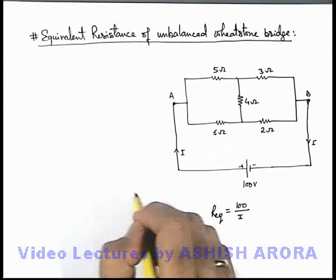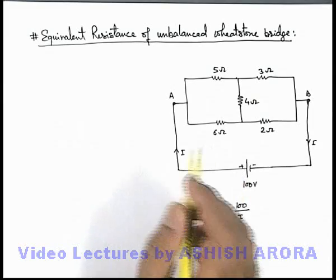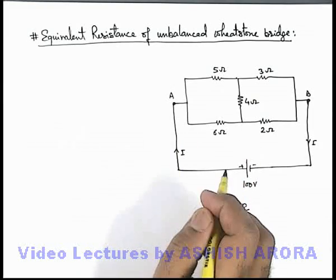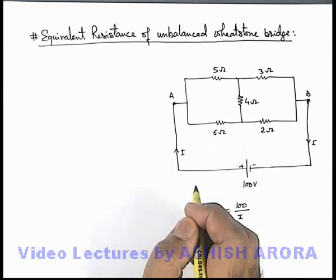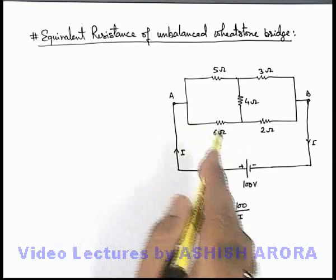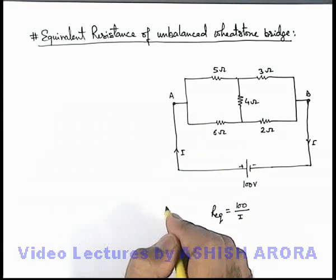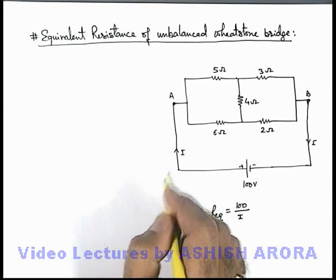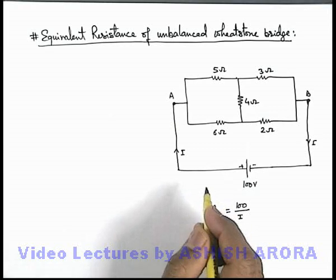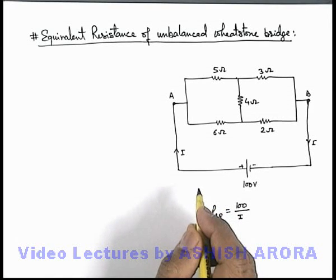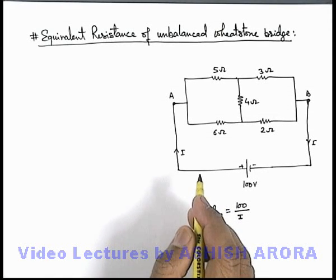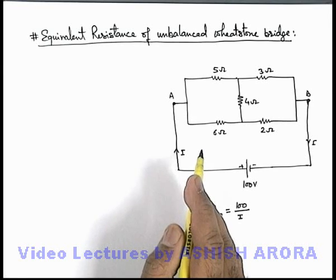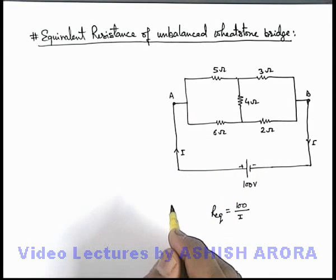I am going to explain the procedure for handling such circuits in which you cannot directly use series-parallel combination for calculation of equivalent resistances. Generally, such circuits are handled with the help of Kirchhoff's Current Law, in which first we distribute the potential at various junctions and points of the circuit.